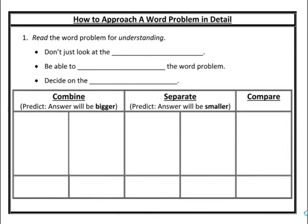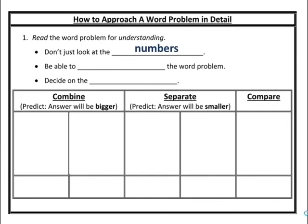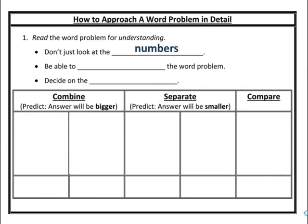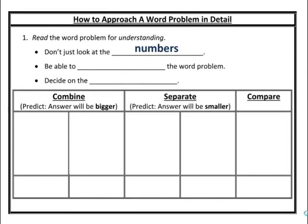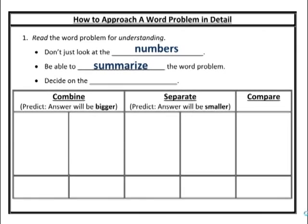Let's break these steps down a little further. Step one: read the word problem for understanding. Don't just look at it — read it for understanding. The plot is in the story; you need to understand the story in order to model it later. Be able to summarize the word problem. If you can retell it in your head, you'll be able to choose the right operation.